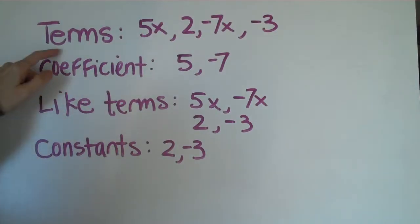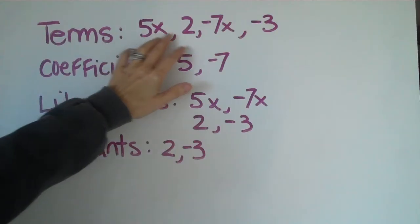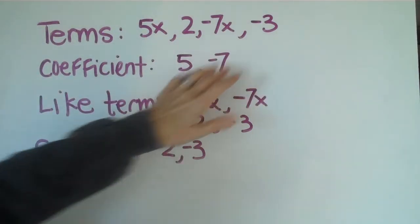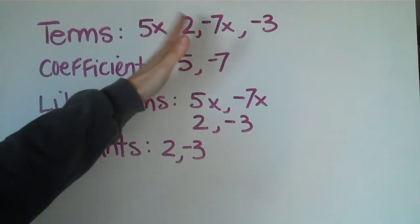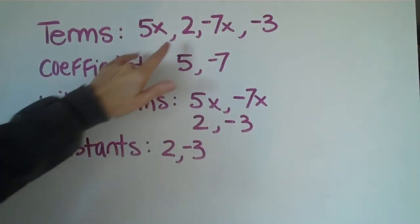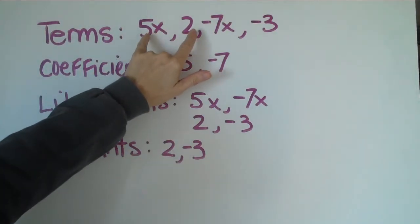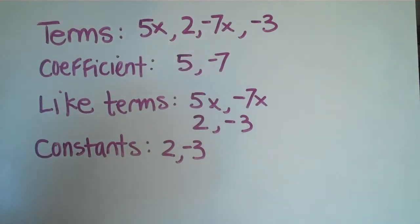Now, by terms, I mean terms like 5x or 2 or negative 7x or negative 3. These are the things on the other side of the operation. You might see 5x plus 2. Well, anything in between the operations would be considered a term, and we'll talk about that in a second.